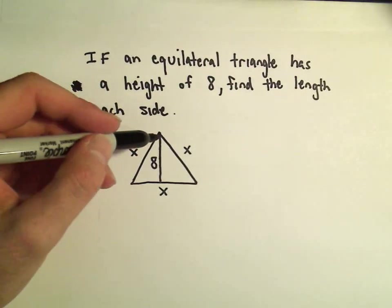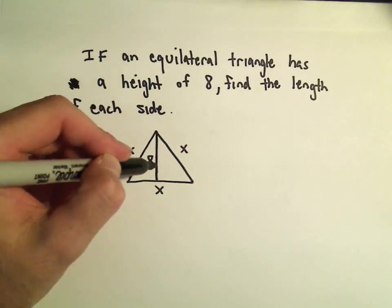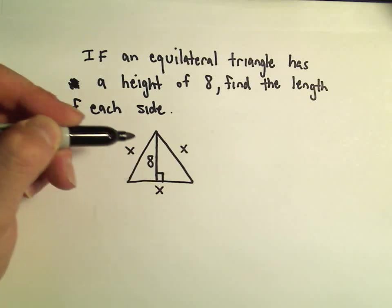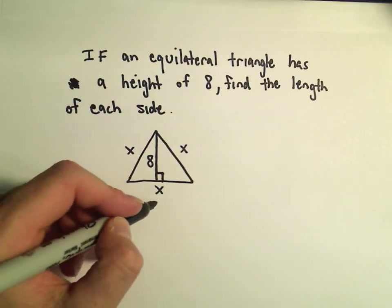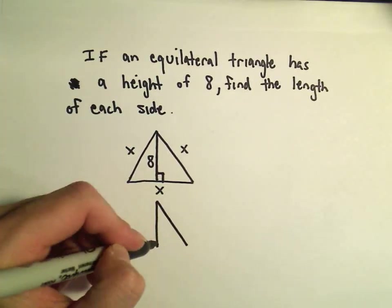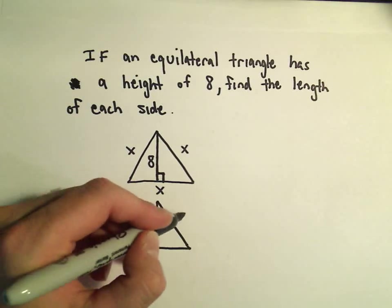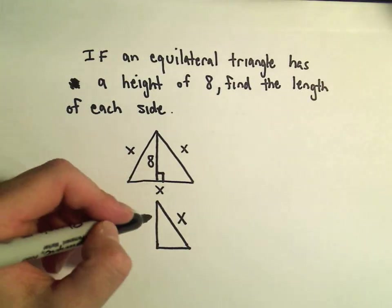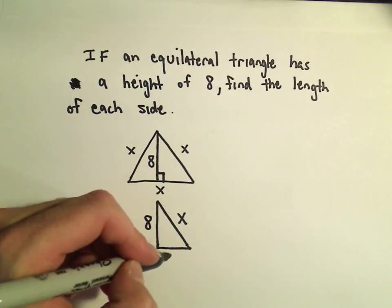Well, the way to find that length, the height is going to actually make a little right triangle. So what I'm going to do is look at that right triangle. Okay, so we labeled this as x. We said that the height is 8.